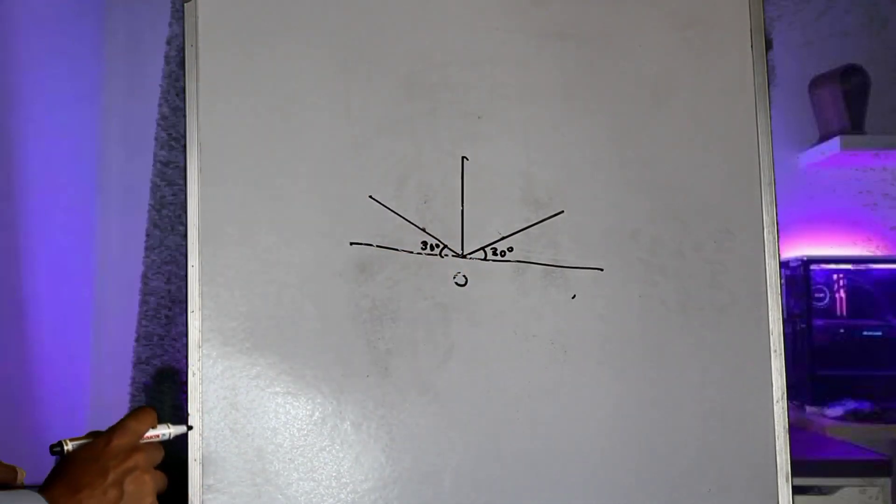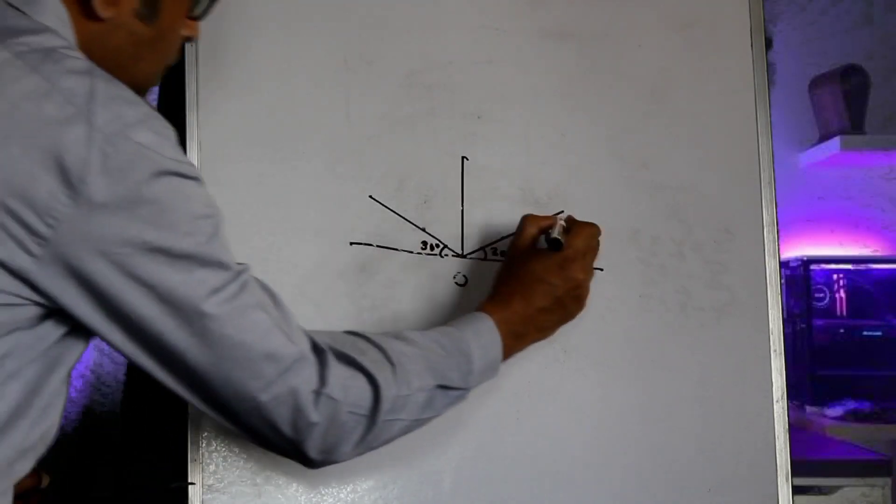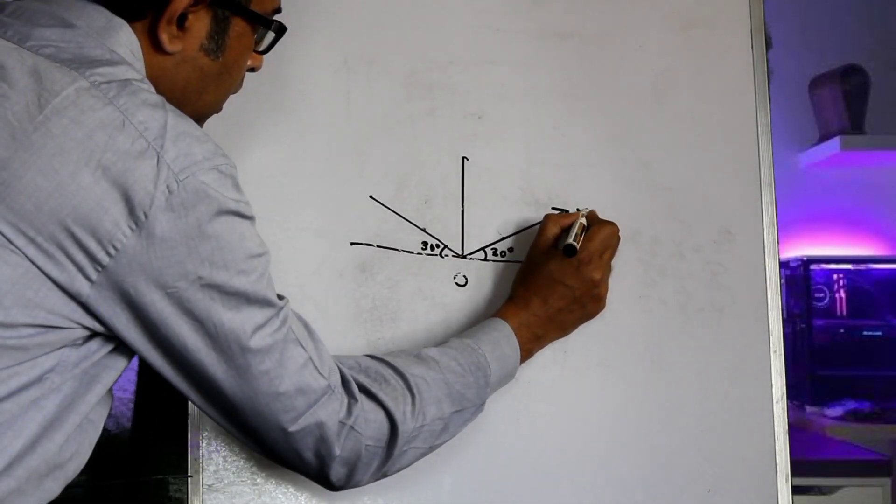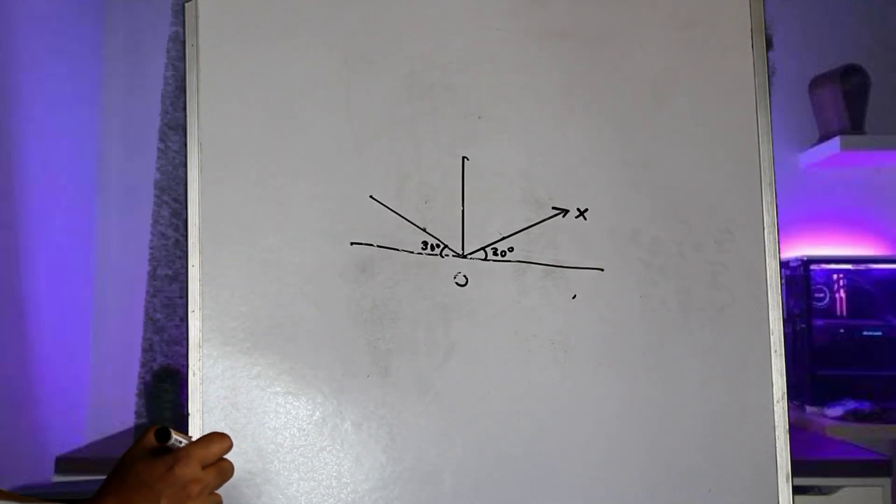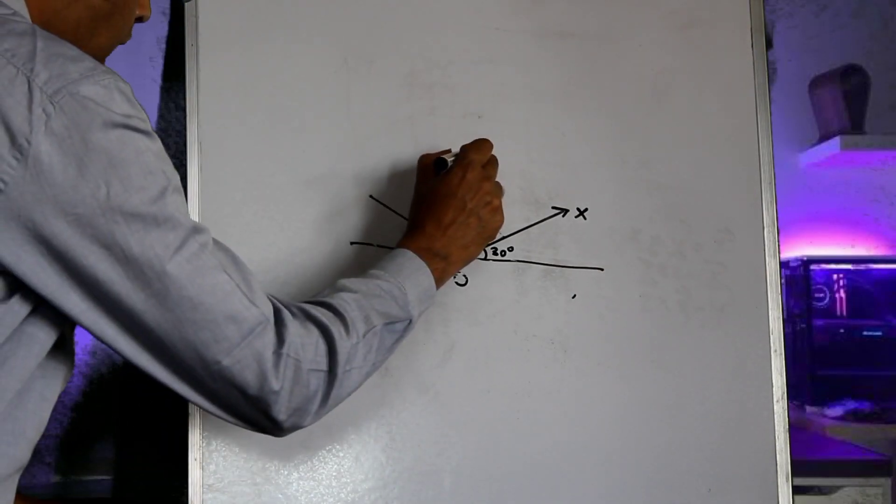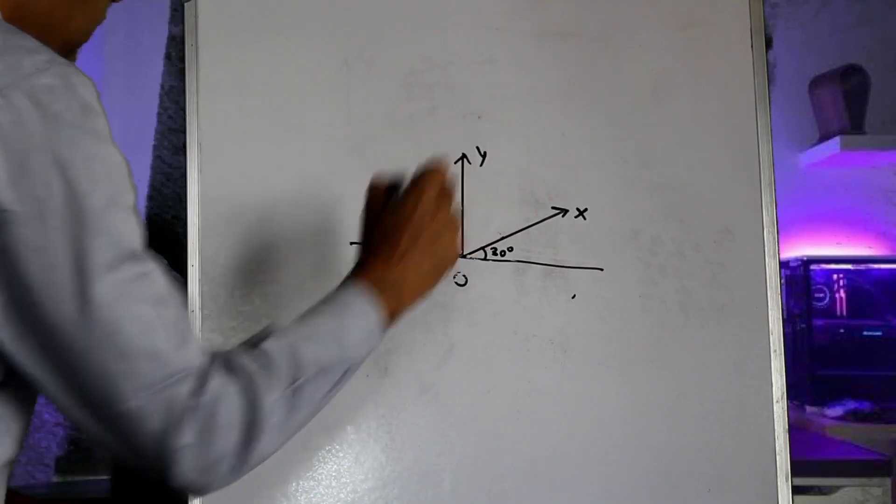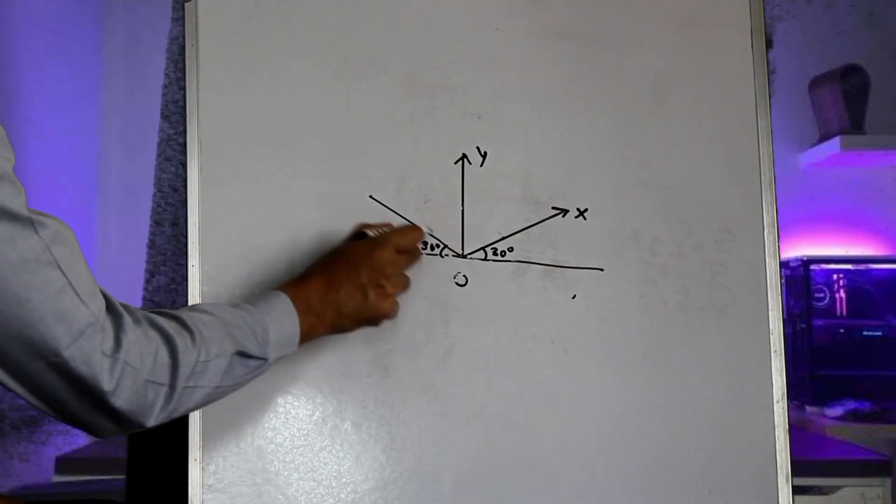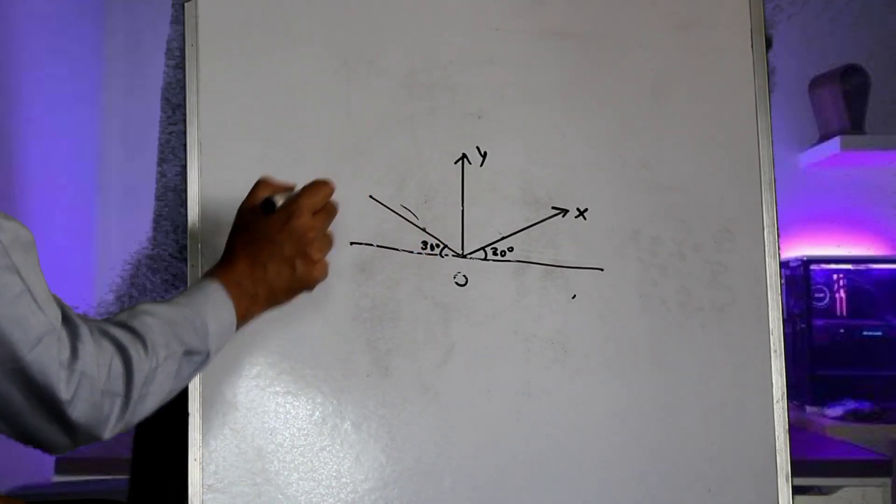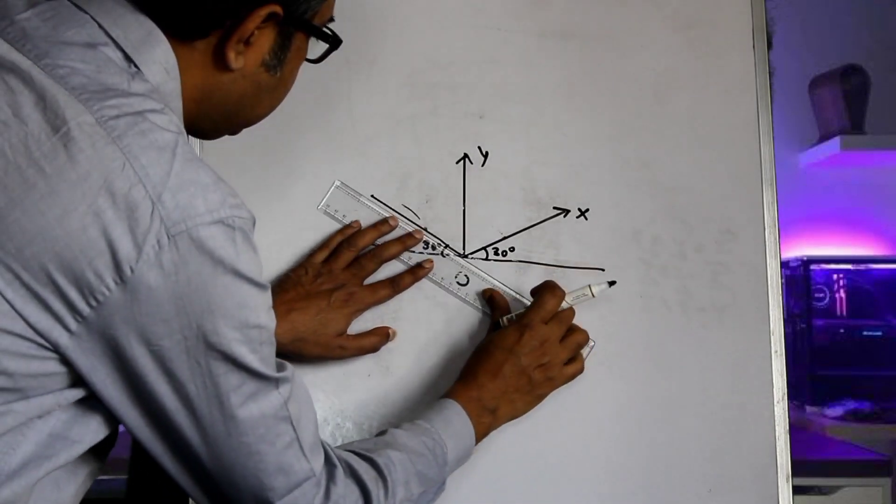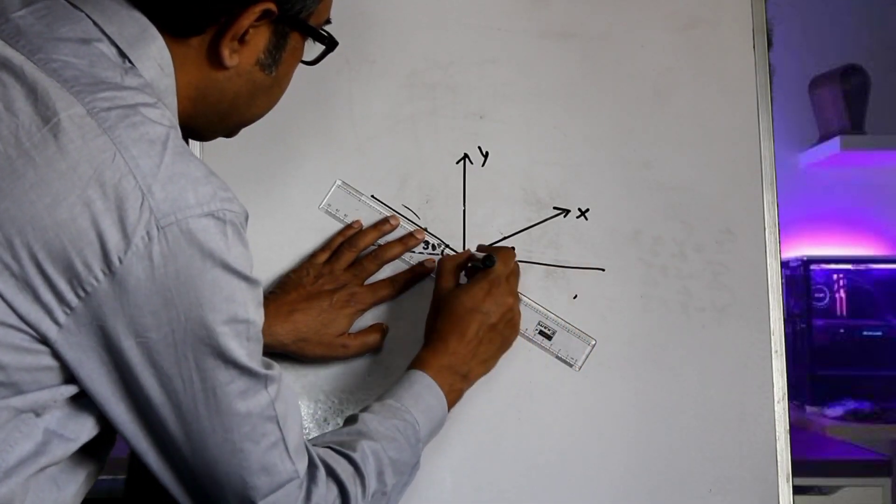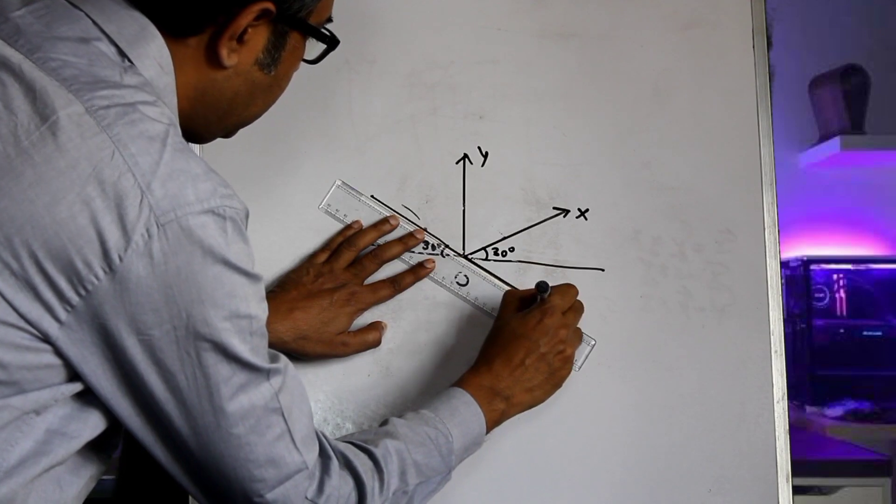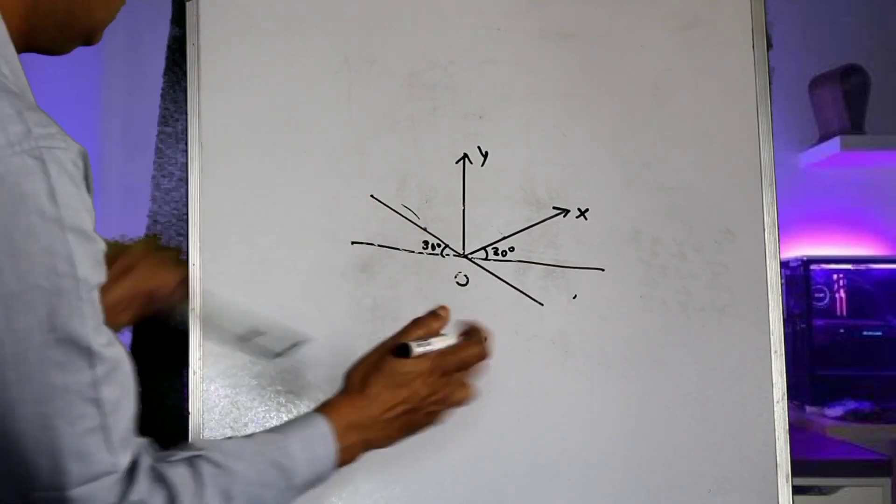So in isometric view, this would give the positive direction of x-axis and this would define the positive direction of y-axis. Now obviously this would be the negative direction of the z-axis. So we need to extend this line in this direction to define the positive direction of the z-axis.